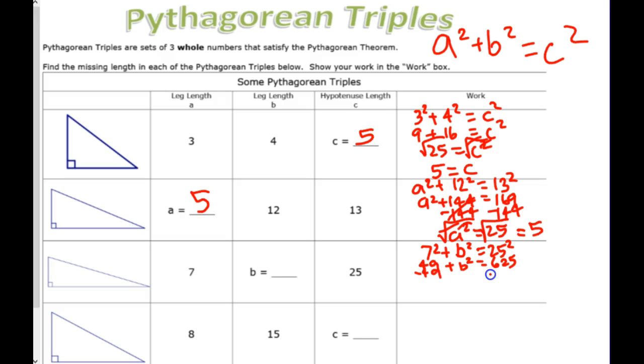Let's get rid of the 49. Sorry, 49. Minus 49. 625 minus 49.